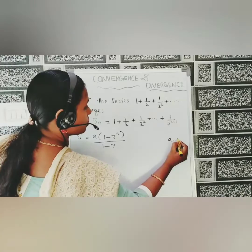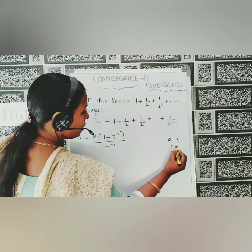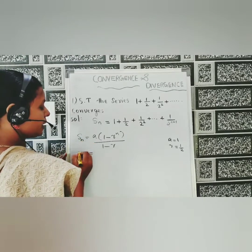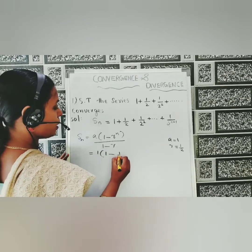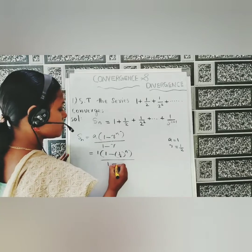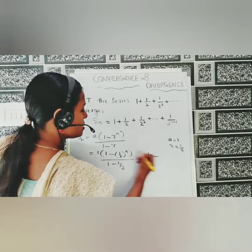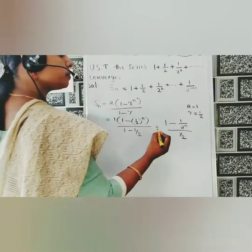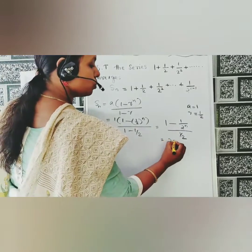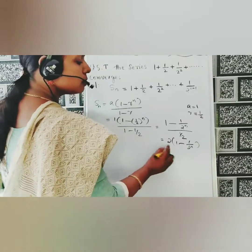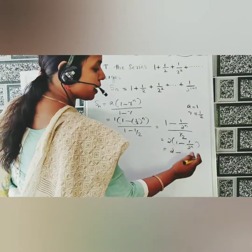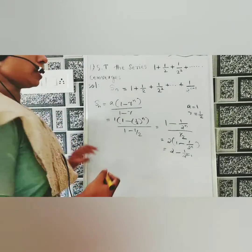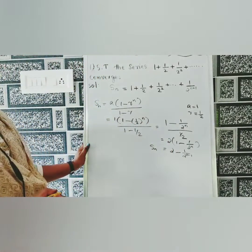Using the geometric series formula: sum = a(1 - r^n) / (1 - r), where a = 1 (first term) and r = 1/2. Substituting: s_n = 1 × (1 - (1/2)^n) / (1 - 1/2) = (1 - (1/2)^n) / (1/2) = 2 - 2/(2^n) = 2 - 1/2^(n-1). So s_n = 2 - 1/2^(n-1).